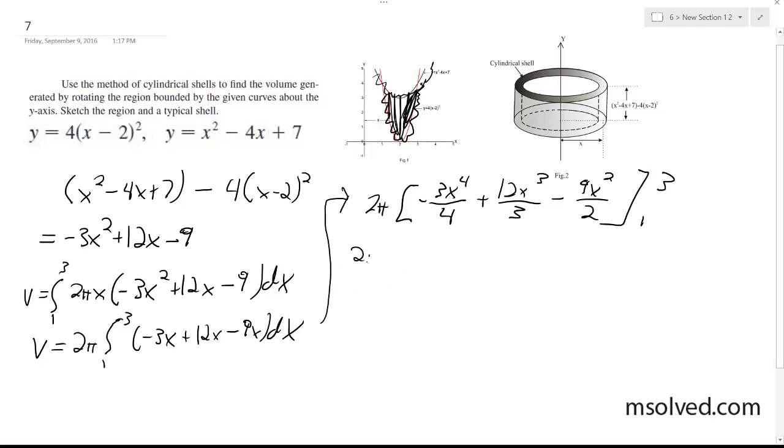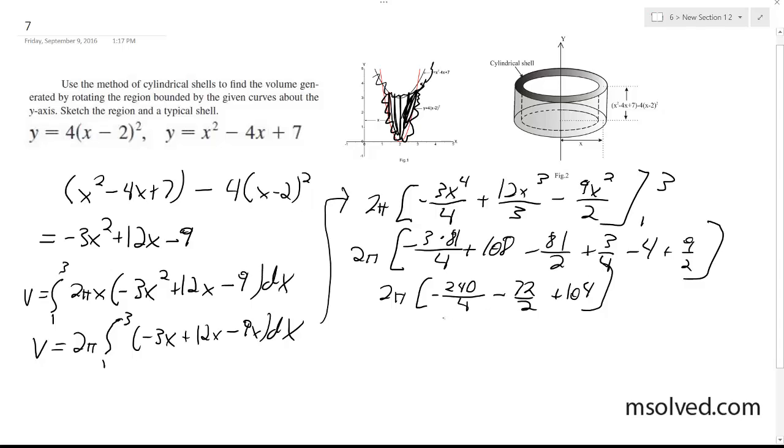So we get 2 pi times negative 3 times 81 over 4 plus 108 minus 81 over 2 plus 3 quarters minus 4 plus 9 halves, and we get 2 pi times negative 240 over 4 minus 72 over 2 plus 104. This simplifies down to 2 pi times 8, which is 16 pi.